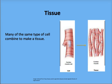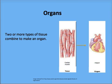Many of the same types of cells combine to make a tissue. In this situation, many muscle cells combine to make muscle tissue. Tissue is made up of cells that are all of the exact same type.